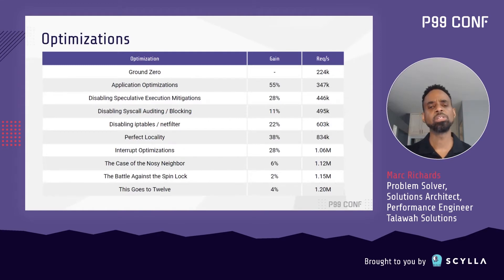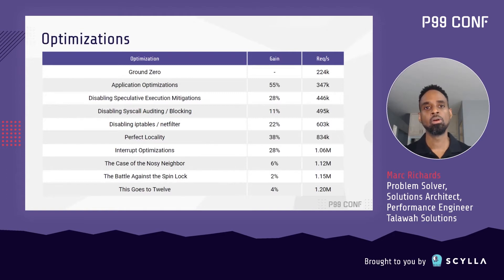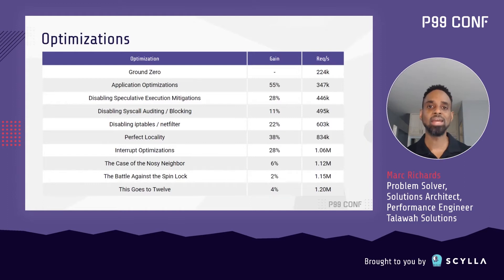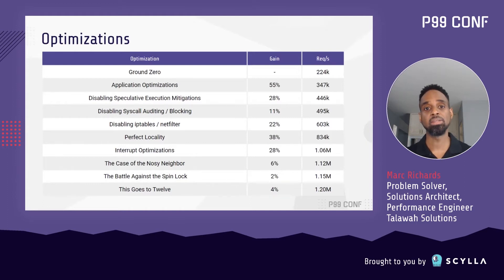Throughput moves from 224,000 requests per second at the beginning to a mind-blowing 1.2 million requests per second by the time we get to the end.